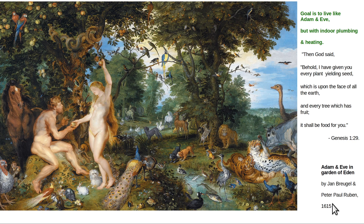Just eating simple things that grow on the trees, on the plants. There's the old Genesis 1:29: 'Then God said, Behold, I have given you every plant yielding seed which is upon the face of all the earth, and every tree which has fruit — it shall be food for you.' This is the best painting, Adam and Eve, by Jan Brueghel and Peter Paul Rubens.